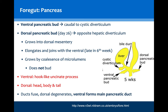In the mature adult pancreas, the ventral pancreatic bud forms the hook-like uncinate process while the dorsal bud forms the head, body and tail. Again, this is commonly assessed particularly in anatomy steeplechase exams.